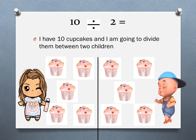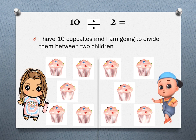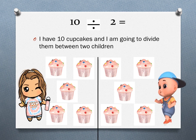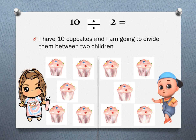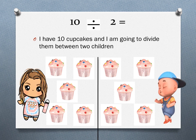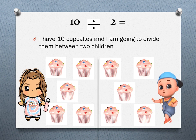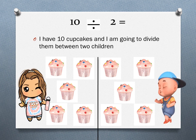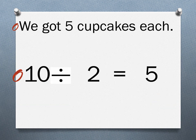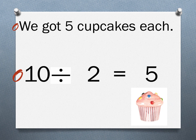Now count the cupcakes: Bubbly has one, two, three, four, five cupcakes, and Moon also has one, two, three, four, five cupcakes. So we divided 10 cupcakes between two children and each child gets five cupcakes. Very good — five cupcakes each!